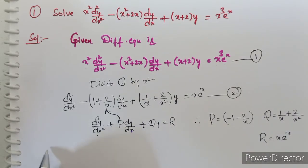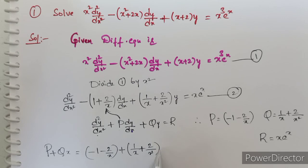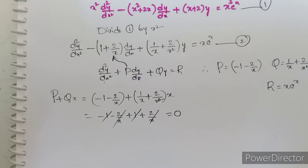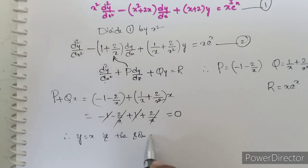Now we test the condition p + qx = 0. We have p = −1 − 2/x and q = 1/x + 2/x². So p + qx = (−1 − 2/x) + (1/x + 2/x²)·x = −1 − 2/x + 1 + 2/x = 0. The condition is satisfied, and therefore y = x is a solution of the complementary function of equation 1.